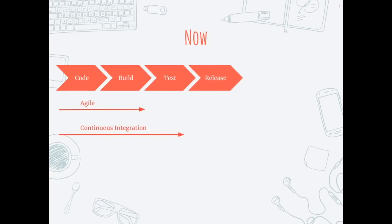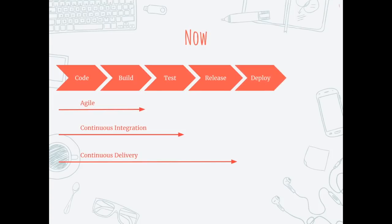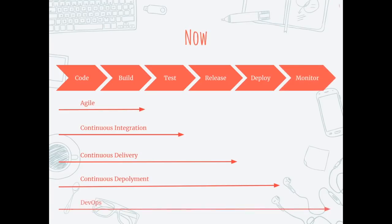Continuous integration extended to releasing products automatically, and we called it continuous delivery. This extended to deploying automatically into production, and we called it continuous deployment. Finally, after deployment, these processes need to be monitored and operated — and we called this DevOps. The complete end-to-end process was called DevOps, and most organizations are moving towards it.